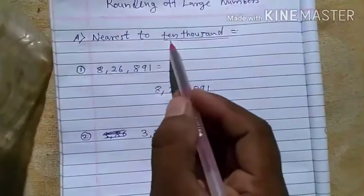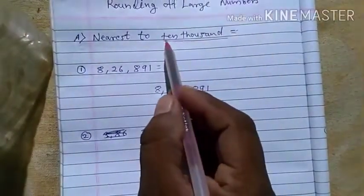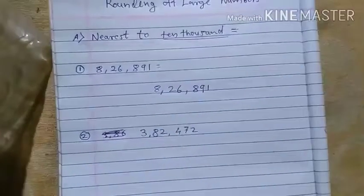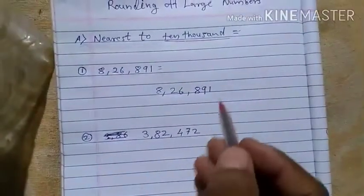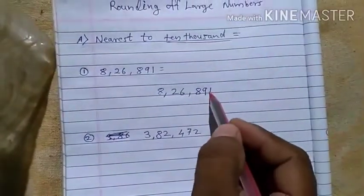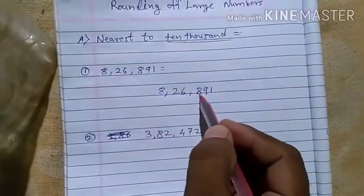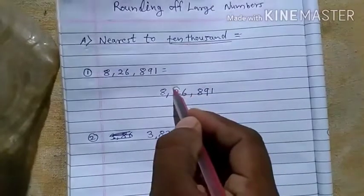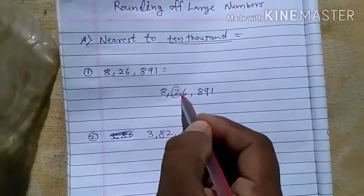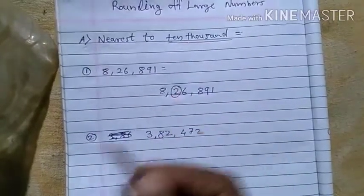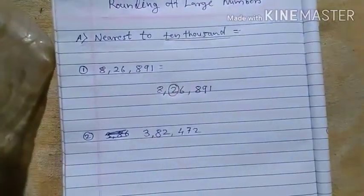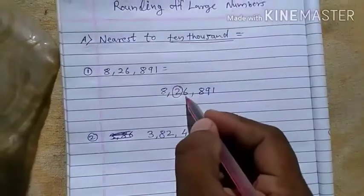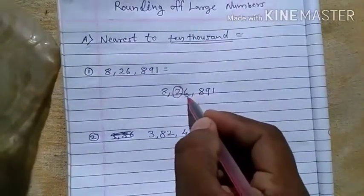You have to find the ten-thousands place. Ones, tens, hundreds, thousands, ten-thousands — then circle the ten-thousands place, and underline the digit on the right side.